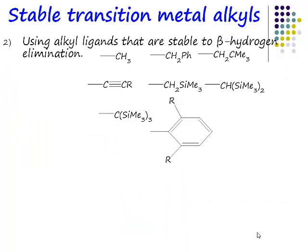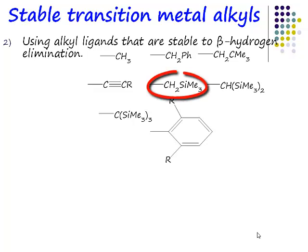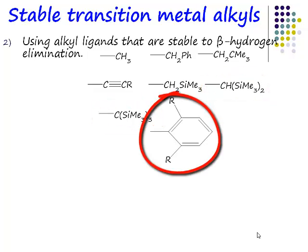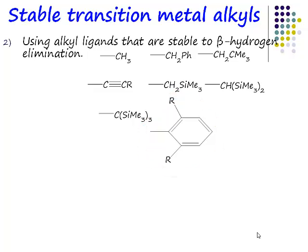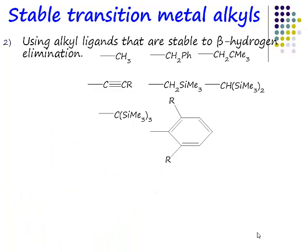What else can we do? Beta-hydride elimination — the clue is in the name. What do all of these alkyl ligands have in common? Here's a methyl group, a benzoyl group, a neopentyl group, a trimethylsilylmethyl group, a bis-trimethylsilyl group, a tris-trimethylsilyl group, and phenyl ligands. What do they all have absent in common? Not one of them contains a beta-hydride. Of course, if you've got no beta-hydrogen, you can't have beta-hydride elimination. And if you don't get beta-hydride elimination, you don't make a hydride, you don't get reductive elimination of your species. So that is another way of stabilising these species.